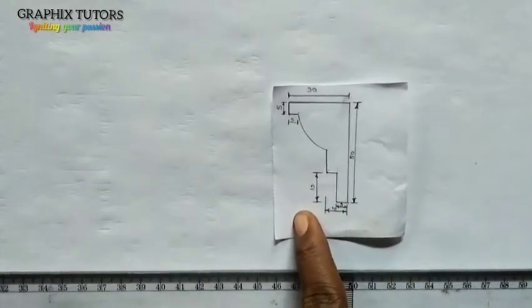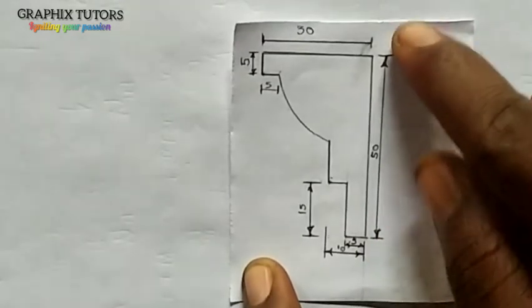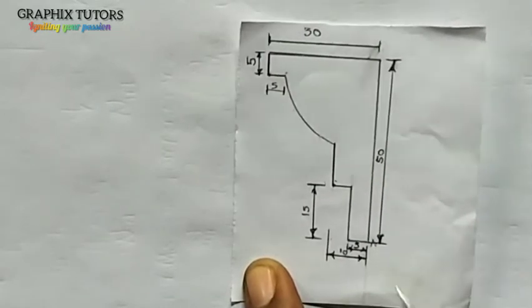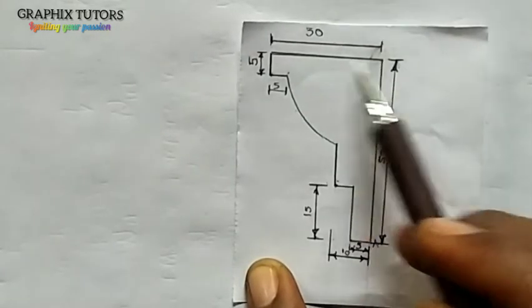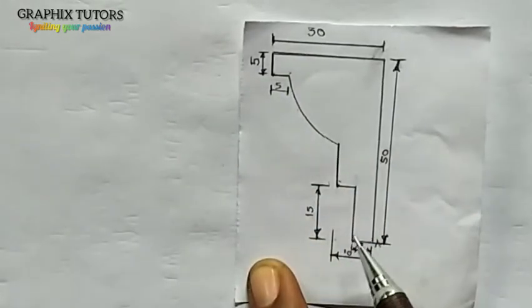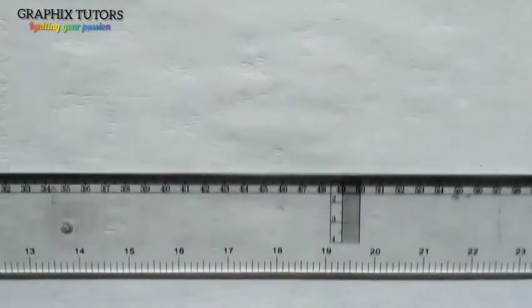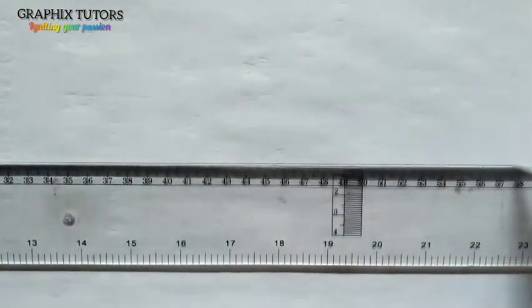If you look at the diagram very well, it's giving some dimensions. The height of this figure from point A up here is 50 millimeters, and from here to here is 30 millimeters. First of all, you draw a horizontal line and a vertical line like this.